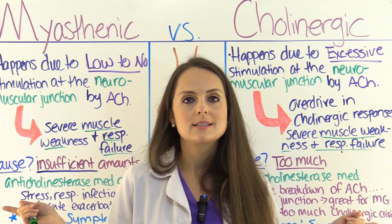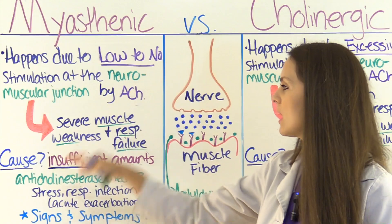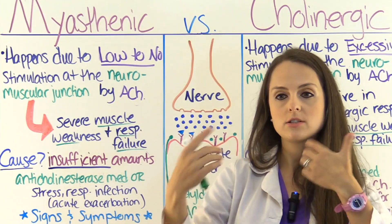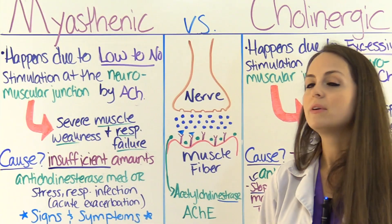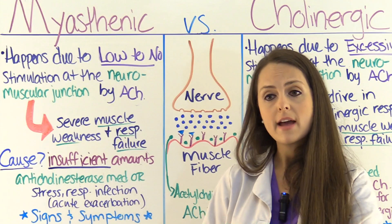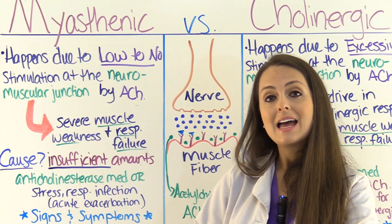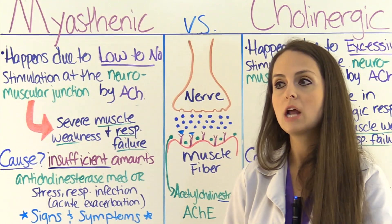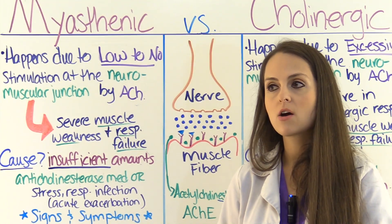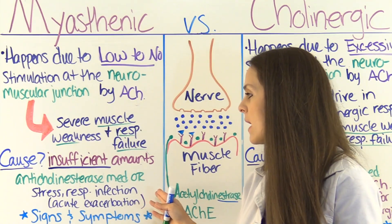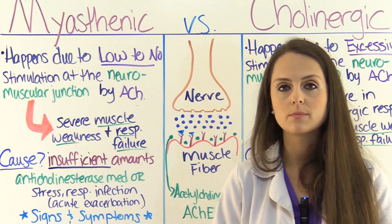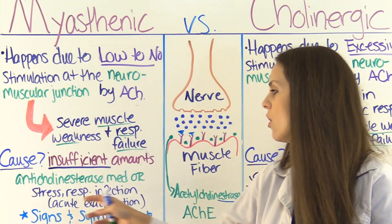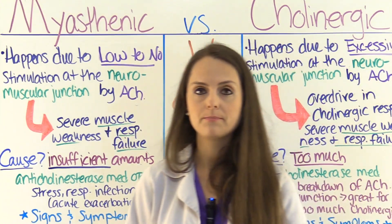Remember the causes because they're different. The cause of myasthenic crisis is that there are insufficient amounts of the anticholinesterase medication — the myasthenia gravis isn't being treated appropriately and more medication is needed. It can also be caused by an acute exacerbation where the patient is experiencing a high amount of stress — surgery, physical stress, mental stress, or a respiratory infection.